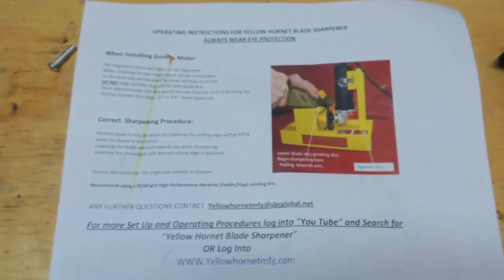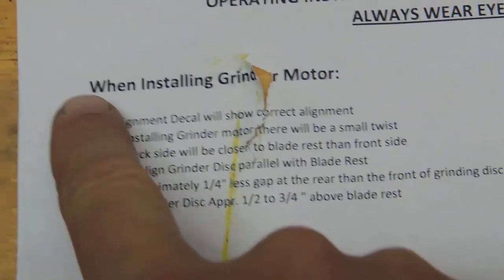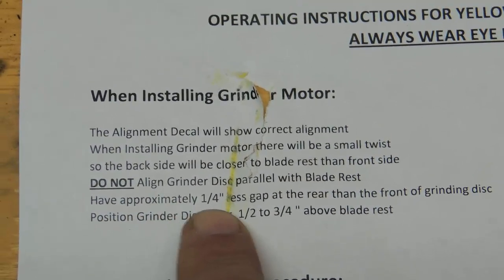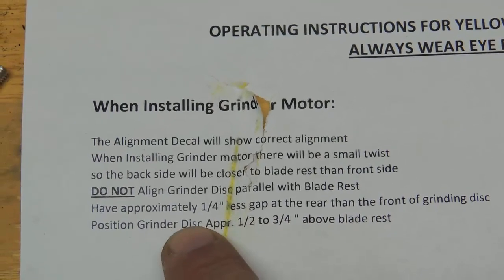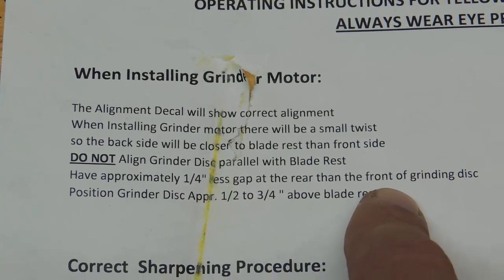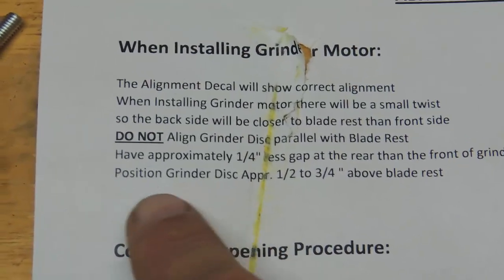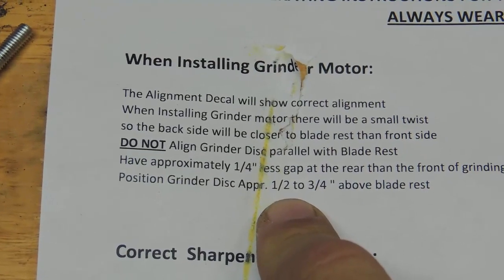You also get a set of instructions. One thing to watch out for in the instructions: here's a big thing to watch out for, and the first time I put this together I did do it wrong. You want a quarter inch gap at the rear, and then a quarter inch difference between the front and the rear of the angle of the grinding disc. Then you also want to have your grinder a half inch to three quarters of an inch above the rest.